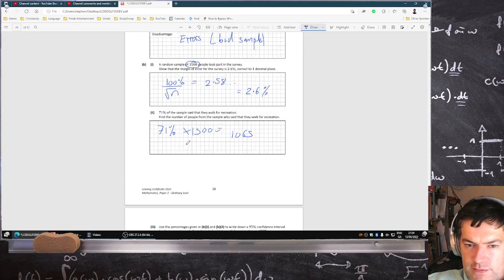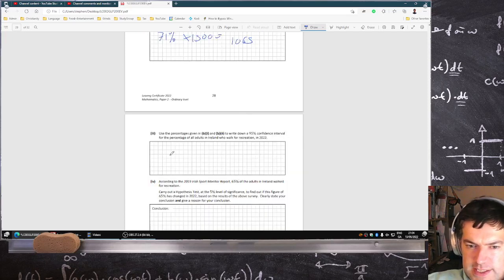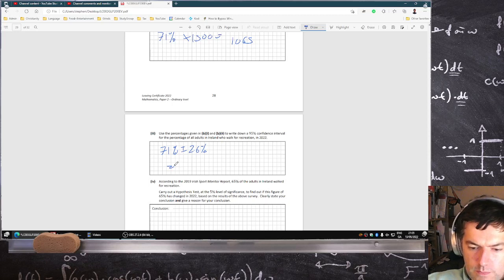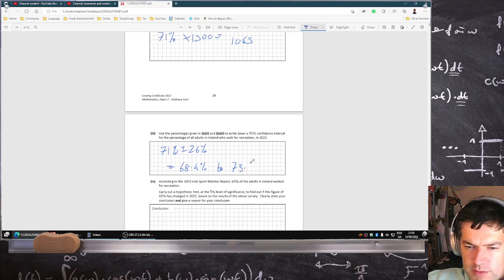So it's 71% plus or minus 2.6%, which equals 68.4% to 73.6%.